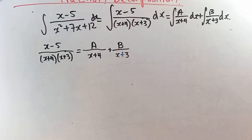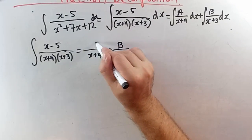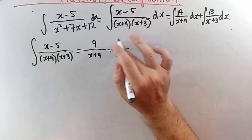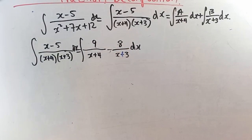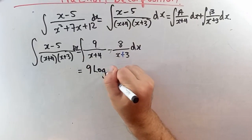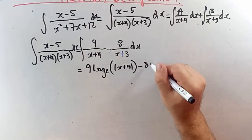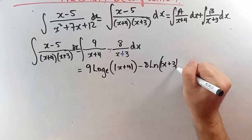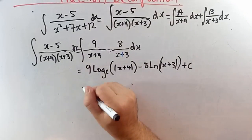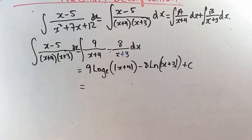With a equals 9 and b equals negative 8, the integral becomes 9 times the integral of 1 over x plus 4 dx minus 8 times the integral of 1 over x plus 3 dx. This gives 9 ln|x plus 4| minus 8 ln|x plus 3| plus c.